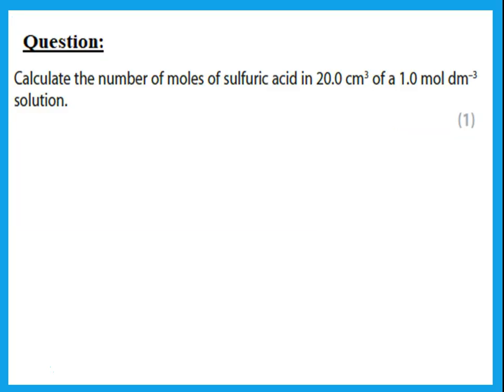Example: calculate the number of moles of sulfuric acid in 20 cm³ of a 1 mol/dm³ solution. This is a solution, so use n = concentration × volume. Concentration = 1, volume = 20 cm³ ÷ 1000 = 0.02 dm³. Therefore n = 1 × 0.02 = 0.02 mol.